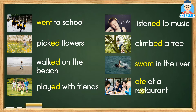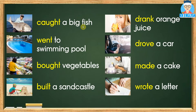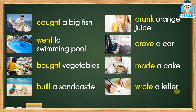Ate at a restaurant. Very good. Now we change these verbs to past tense. Repeat after me: Caught a big fish. Went to the swimming pool. Bought vegetables. Built a sandcastle. Drank orange juice. Drove a car. Made a cake. Wrote a letter.